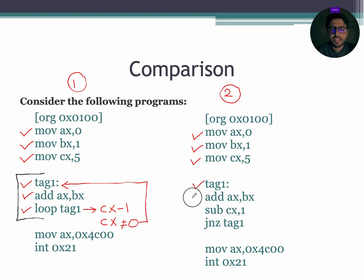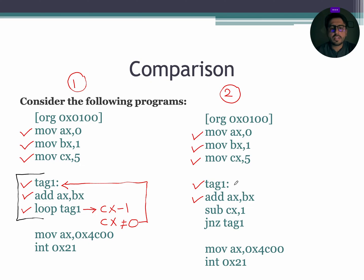The ADD AX, BX instruction is going to add the values of AX and BX and store the result in AX. For the current situation, AX is 0000 and BX is 0001, so the sum will be 0001, which will be updated in the AX register.